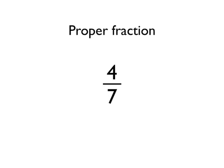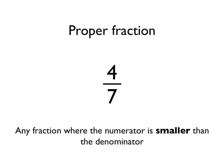4 sevenths. This is a proper fraction. How do we know it's a proper fraction? Because the numerator is smaller than the denominator. 4 is smaller than 7, so this is a proper fraction.